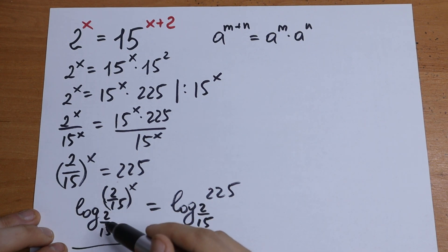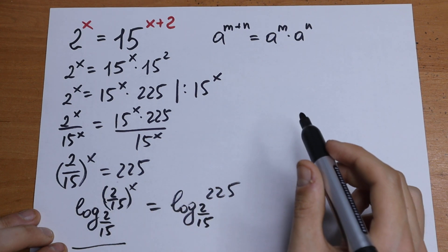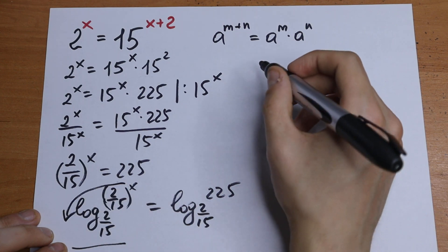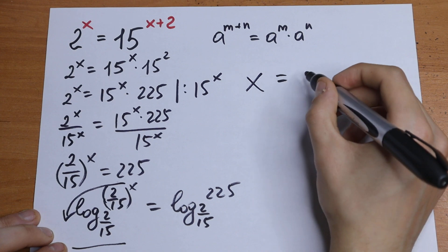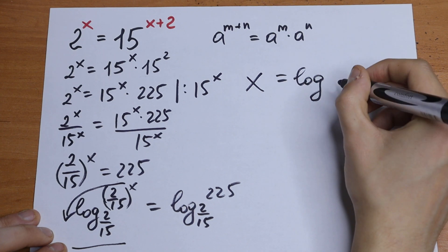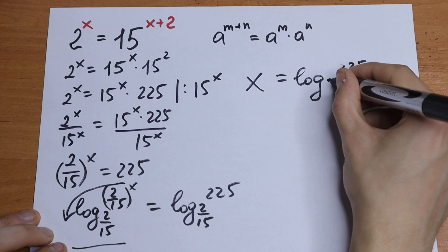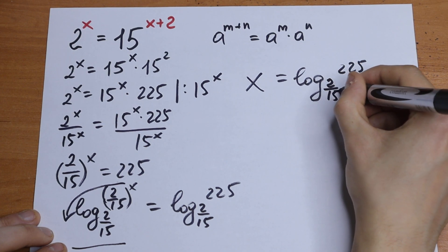Right here we will have 1, we have a log property, so right here x jumping on the left, so we will have only x equal to log 225 base of 2 over 15.